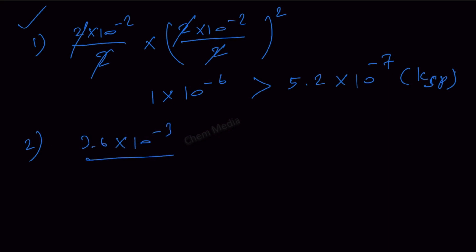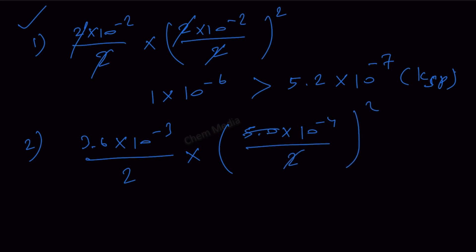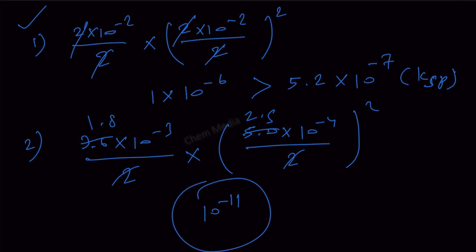For option 2: (3.6 × 10⁻³)/2 × [(5 × 10⁻⁴)/2]² = 1.8 × 10⁻³ × (2.5 × 10⁻⁴)² ≈ 10⁻¹¹. Since 10⁻¹¹ is less than 10⁻⁷, option 2 is definitely wrong — no precipitate forms.